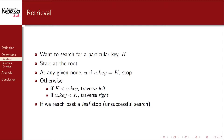Suppose we want to search for a particular key value K. As with all traversal strategies, we start at the root. At any given node, we compare its key value to K. If they're equal, we stop — it represents a successful search. Otherwise, we exploit the binary search tree property: if the search key is less than the current node's key, we traverse left; if greater, we traverse right. We continue until we find the key or reach the end of the tree past a leaf node, implying an unsuccessful search.